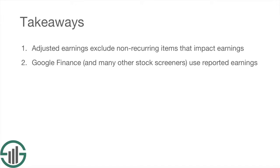The second lesson is that Google Finance and many other stock screeners, especially the free ones, tend to use reported earnings. On the surface it might not be clear why that's so bad, but as we saw in this video, that can be extremely dangerous. Reported earnings can sometimes be higher than adjusted earnings, and that can lead you to buy overvalued stocks on the assumption that they're actually undervalued, which is a very dangerous investment strategy.